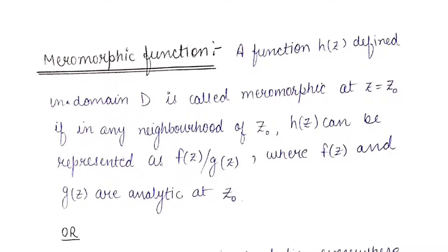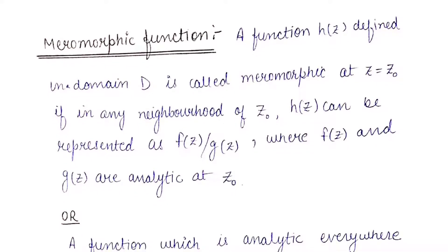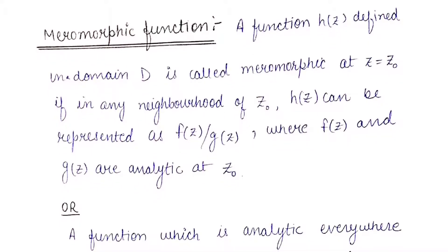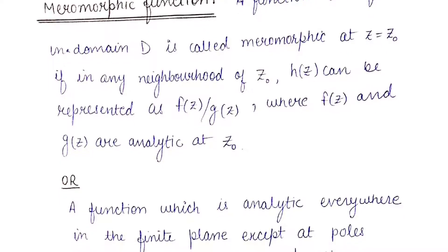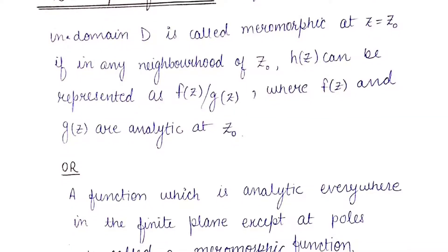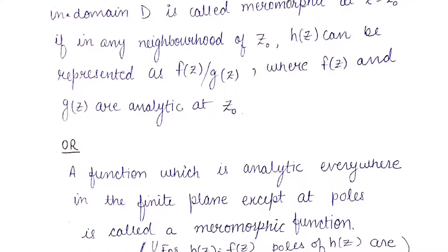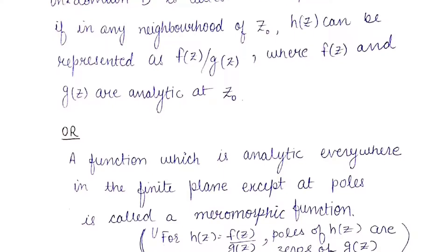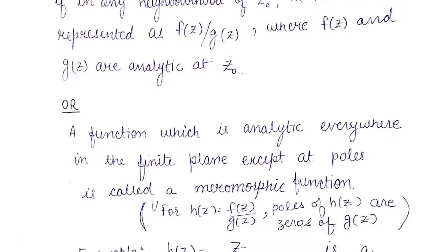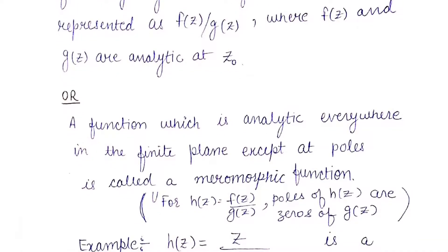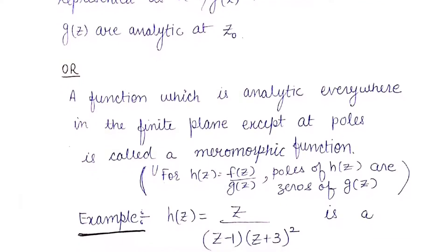For that, first we need to know what is a meromorphic function. A function well-defined in a domain D is called meromorphic at the point z = z₀ if in any neighborhood of z₀, it can be represented in the form f(z)/g(z), where both functions f(z) and g(z) are analytic at z₀. In other words, a function which is analytic everywhere in the finite plane except at finitely many poles is called a meromorphic function.